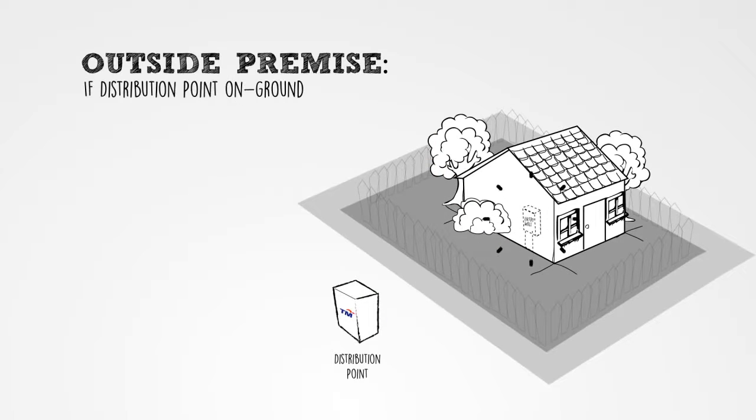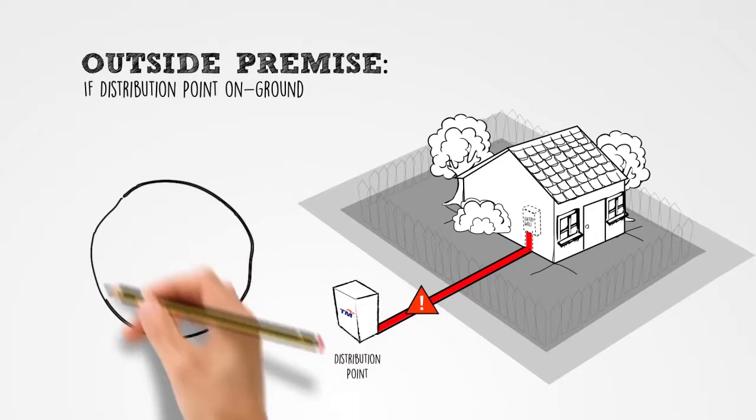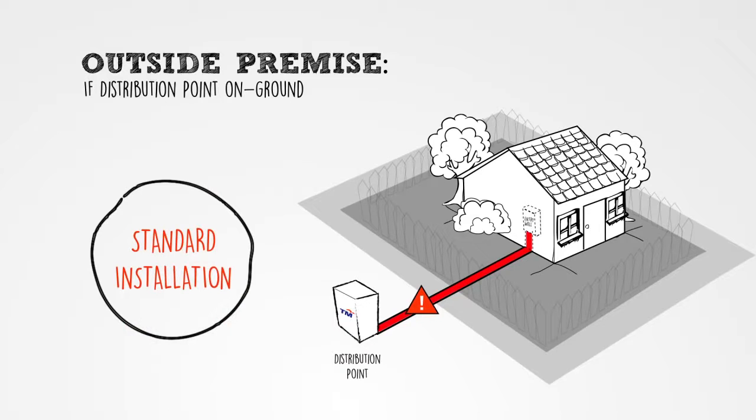For on ground DP, if the underground cable is blocked outside your premise compound or building management, it will be a standard installation, which means no additional charges. However, this is subject to your private area housing policy, if any.